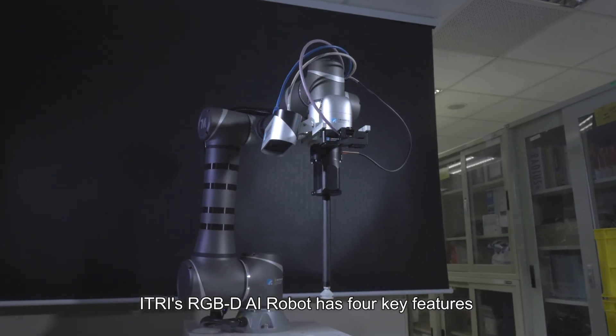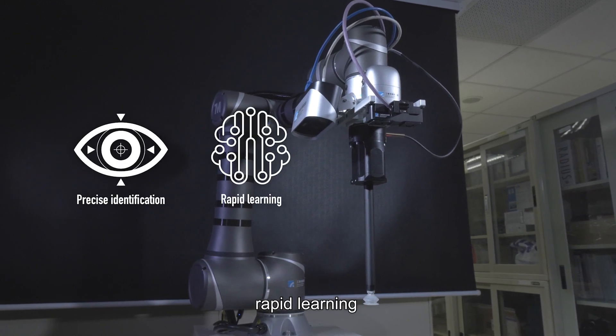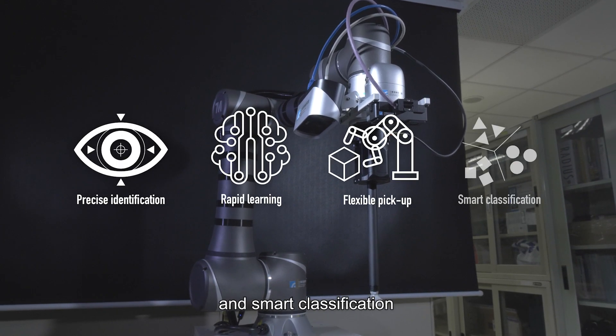Eitri's RGBDAI robot has four key features: precise identification, rapid learning, flexible pick-up, and smart classification.